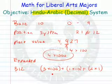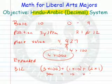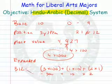So this is what I call expanded form: 3 100s, that's 300, plus 1 ten, that's 10, plus 2 ones, that's 2, and you can see that's equal to 312.